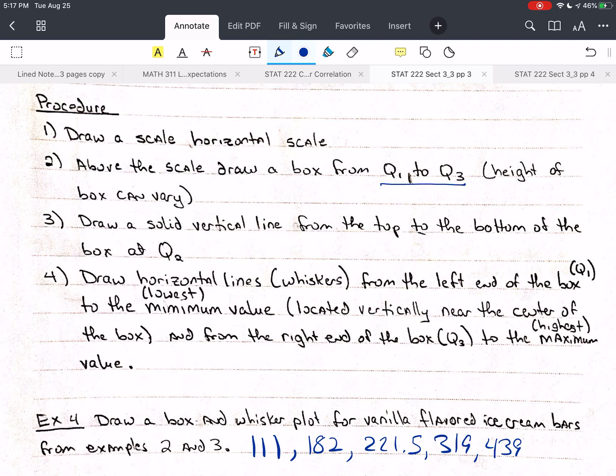Then you're going to draw a solid vertical line, straight up and down, from the top to the bottom of the box at the value of Q2.